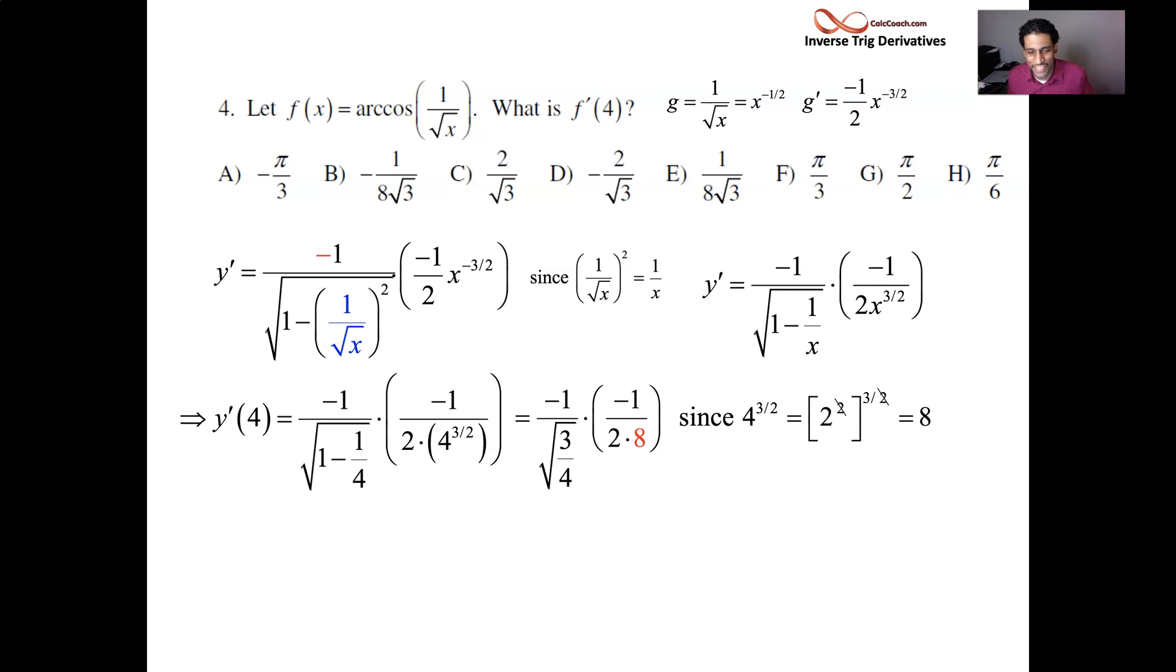Alright, great. So, we have negative 1 over the square root of 3 quarters times a negative 1 over 2 times 8. Well, this square root of 3 quarters is root 3 over 2. So, we'll flip that and have it as 2 over root 3. And it's times negative 1 over 16. So, the 2 and the 16 can cancel to be an 8. And there's your answer. It's 2 negatives. Make it a positive.